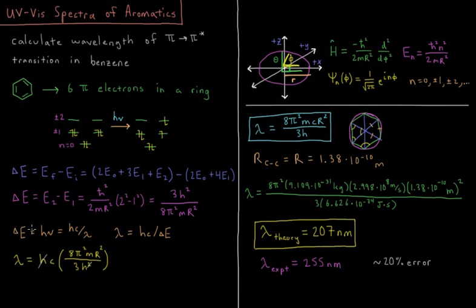So ΔE is also equal to Planck's constant times the frequency of the photon we absorbed, which is equal to Planck's constant times the speed of light divided by the wavelength of that photon. So the wavelength of the photon we absorbed is going to equal Planck's constant times the speed of light in the appropriate distance units divided by the change in energy.